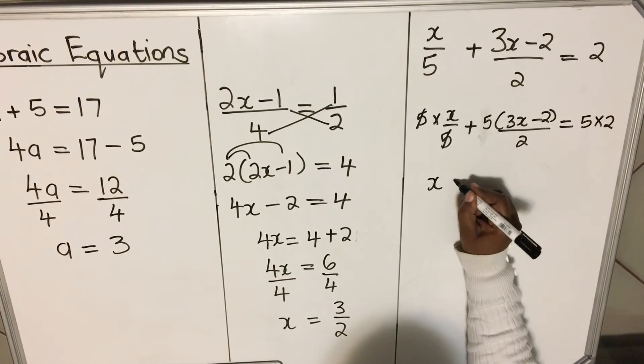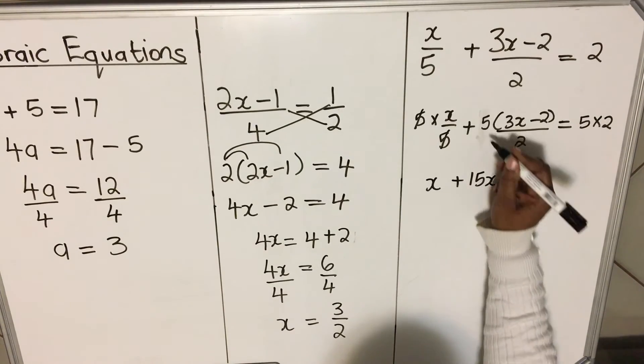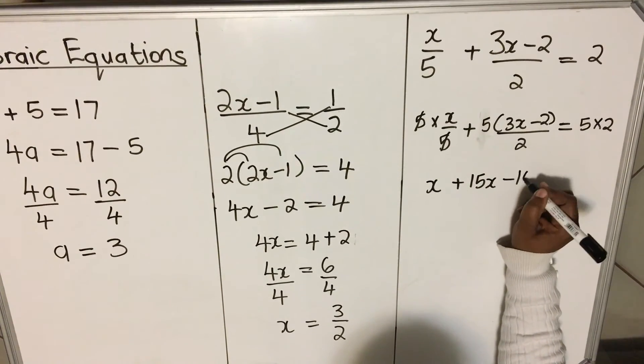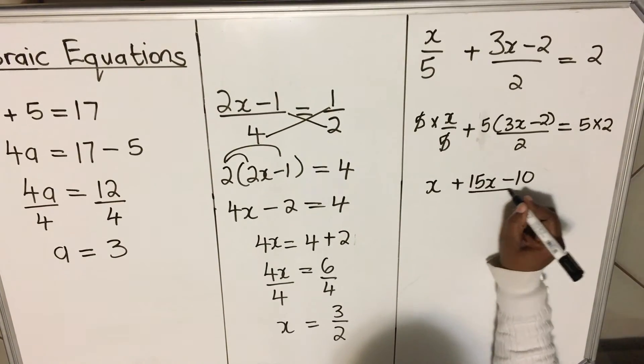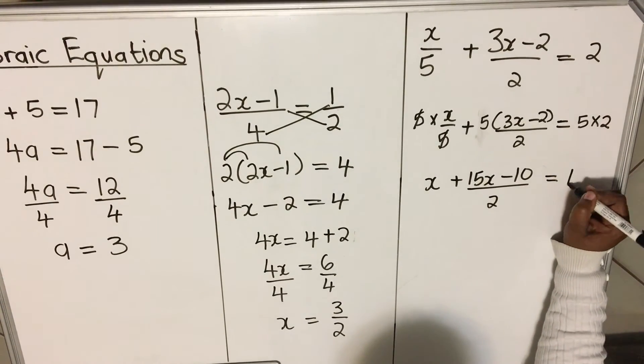So here will be left with x. Here, 5 times 3 is 15. x, 5 times 2 is minus 10. But everything is still divided by 2. And then 5 times 2 is 10.